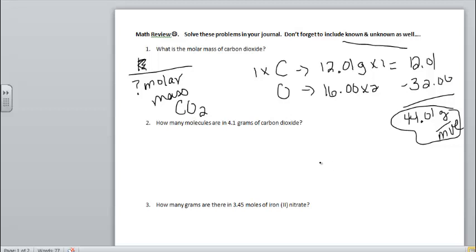Now the next one that we have to do for number two, what they're telling me my known is 4.1 grams of carbon dioxide. My unknown is molecules. Now as a reminder, when we do these conversion factors, we don't have a direct route to go from grams to molecules. What we have to go between is moles. So I'm first going to have to go grams to moles of carbon dioxide, and then moles to molecules.